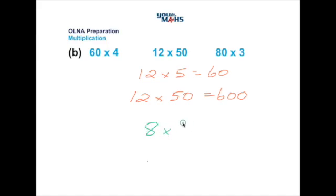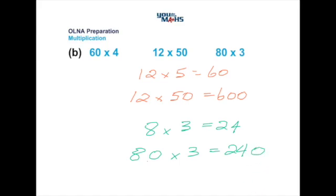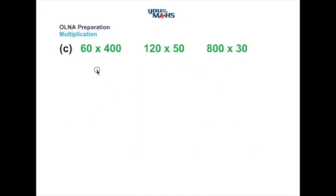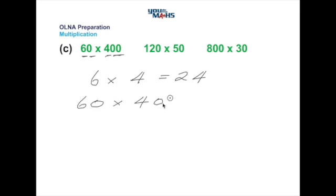Likewise with the next problem, 8 multiplied by 3 equals 24, and any zeros at the end we place at the end of our solution too — so 80 times 3 becomes 240. If multiplying by numbers which have zeros at the extreme right-hand side, we can just place them at the end of our solution. Using that same idea for 60 multiplied by 400: six multiplied by four is 24, then 60 has one zero and 400 has two zeros, so the result is 24 followed by three zeros.